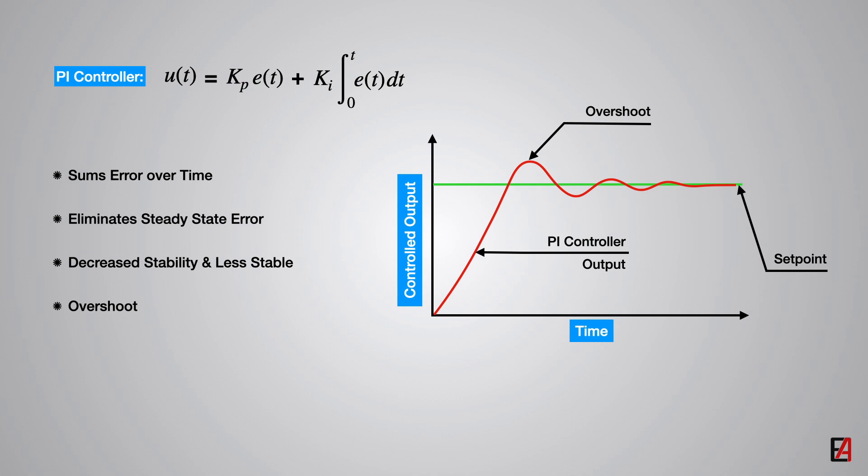Typically, in PI controller, there is some decreased stability due to the presence of the integral mode. That is, the addition of the integral mode makes the total loop slightly less stable and also produces high overshoot.